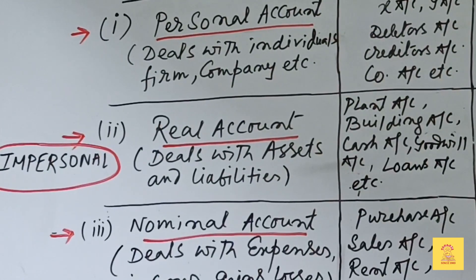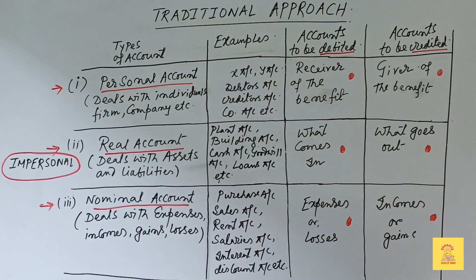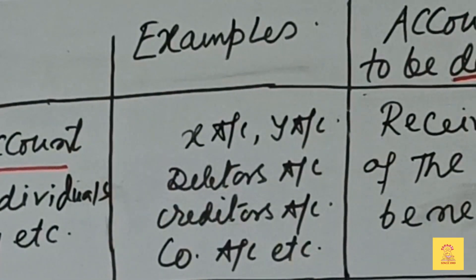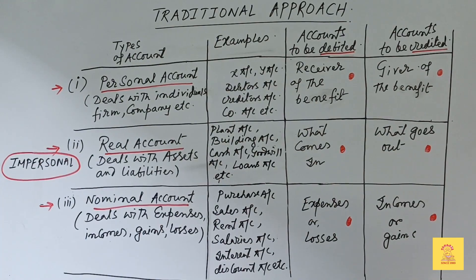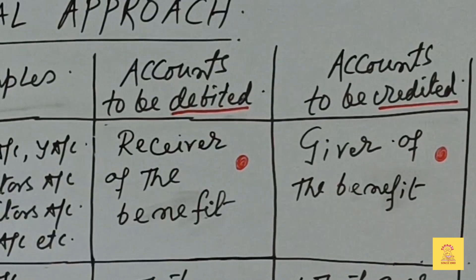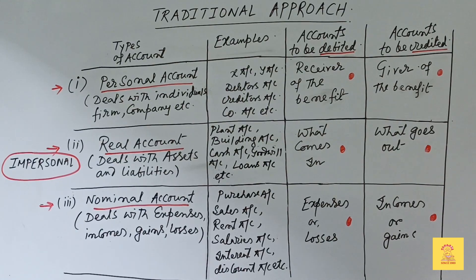What is a personal account? A personal account deals with individuals, companies, etc. — where persons are involved. Examples include X account, Y account, Ram account, Sam account, debtors account, creditors account, and company accounts. The rule for personal accounts is: debit the receiver of the benefit and credit the giver of the benefit.